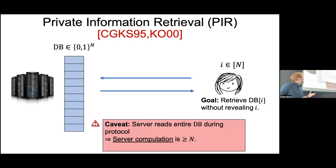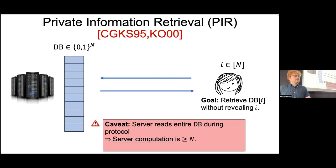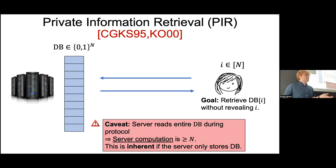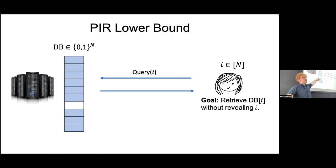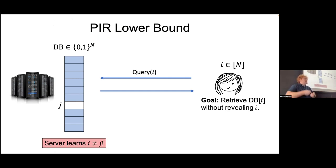There's a big caveat: during all protocols we know of for private information retrieval, the server reads the entire database, so the server computation is at least linear in the database size. This is inherent if the server only stores the database. The proof is simple: imagine Alice is querying on index i, and the server reads almost the entire database but doesn't read a specific index j. The server hasn't read index j but has answered Alice's query, so the server knows it didn't give Alice whatever's at index j — therefore the server knows that i is not equal to j.